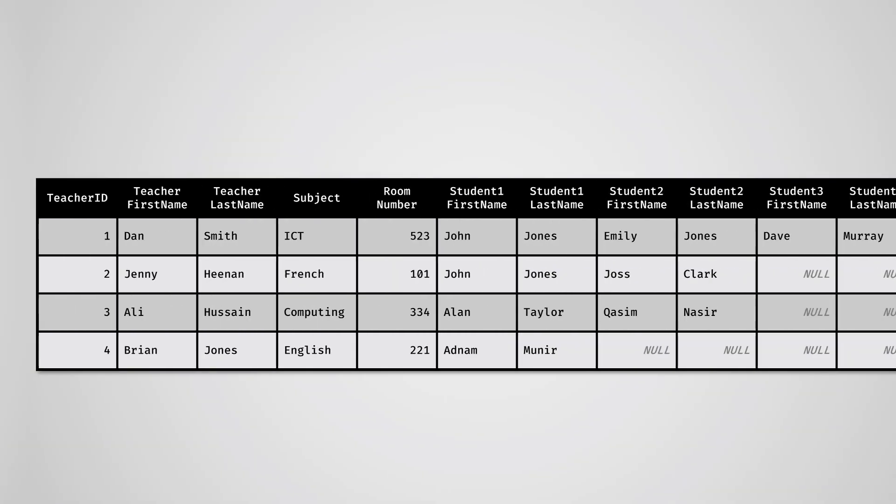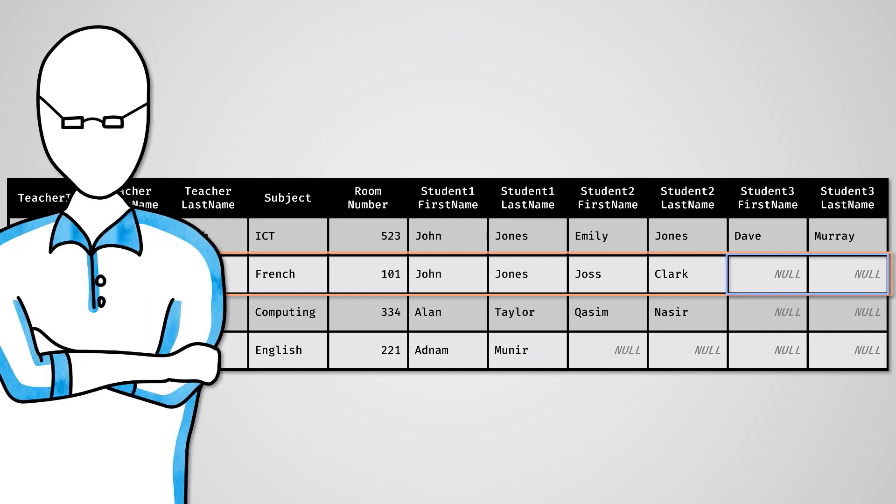Another way around this is to simply add new columns for all the students. The problem here is record number two. The French teacher Jenny Heenan only has two students taking the subject. This means the rest of the columns are empty. Empty space in a database is bad as in computer memory it's not actually empty. It means system memory is being reserved but not filled. This also means databases will get very large.